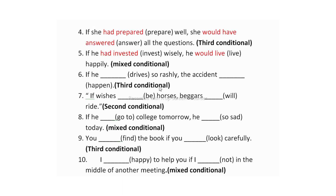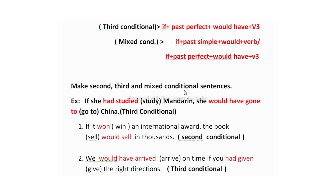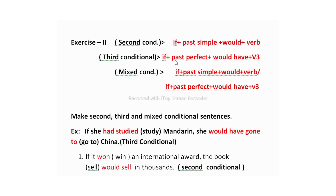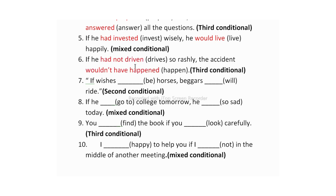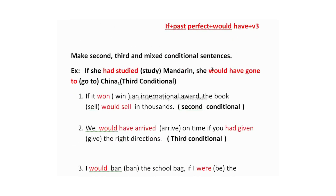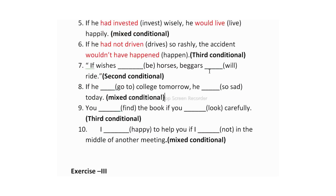The sixth one is: 'If he dash so rashly, the accident dash.' You have to add third conditional. Structure: if + past perfect + would have + V3. Answer: 'If he had not driven so rashly, the accident would not have happened' — 'driven' is past perfect and 'happened' is V3. Memorize all the structures so it will help you to fill the blanks.